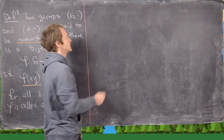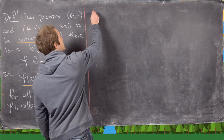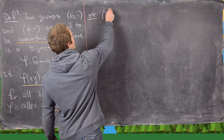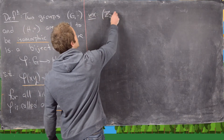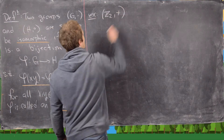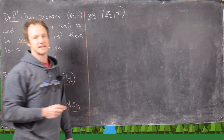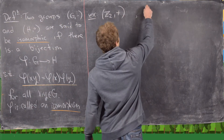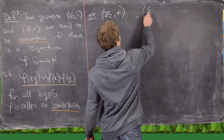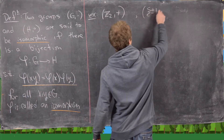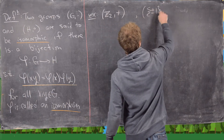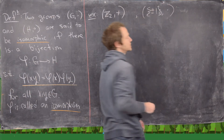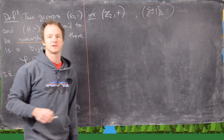Let's look at some examples. The first one is Z₂ with addition modulo 2, and then the set {+1, -1} with multiplication as the operation.